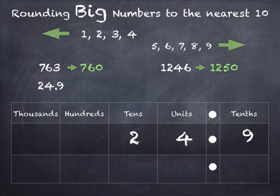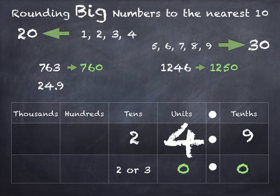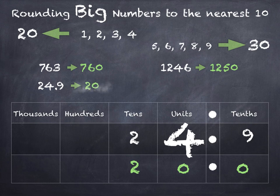24.9. The tens will be a 2 or a 3, the units will be 0 and the tenths will be 0. So we're going to round down to 20 or up to 30. The units digit is 4, so that tells us that we need to round down to 20. 24.9 rounds to 20.